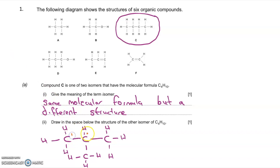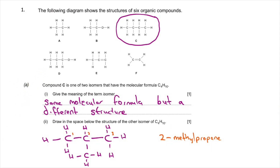So I put the CH3 group in the middle. You can see I've drawn a longest chain of three carbons with a CH3 group in the middle. If I was to name this — not asked in the question — it would be called 2-methylpropane, because the longest chain is three carbons long and there is a methyl group on carbon two. If you drew the isomer correctly, you get one mark.